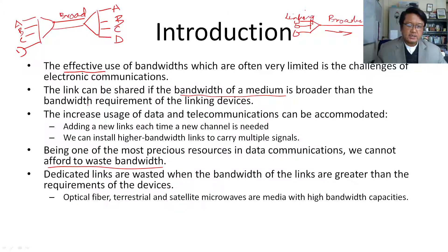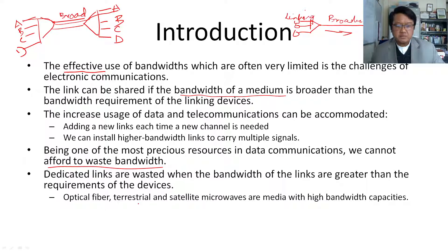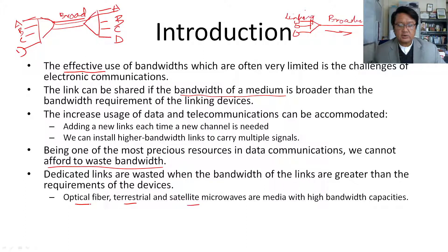Dedicated links are wasted when links are dedicated. For example, if we reserve a channel for A-to-A or B-to-B, whether they use that bandwidth or not, it will be reserved for them — and when they don't use it, it becomes a waste. Optical fiber, terrestrial and satellite microwaves are media with high bandwidth capabilities. Therefore, given their high bandwidth capacity and the relatively low bandwidth requirements of linking devices, we need multiplexing techniques to use this high-bandwidth capacity media effectively.